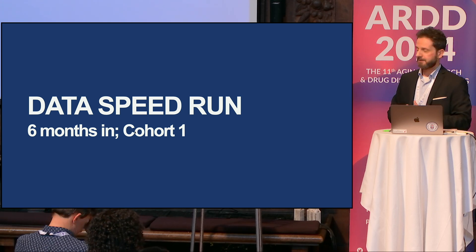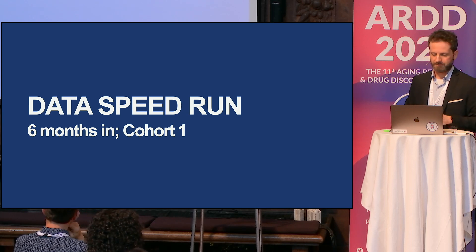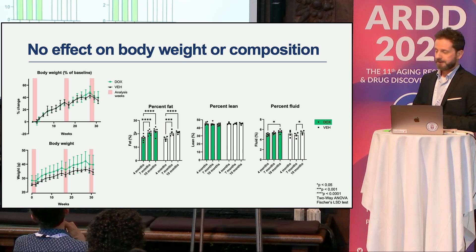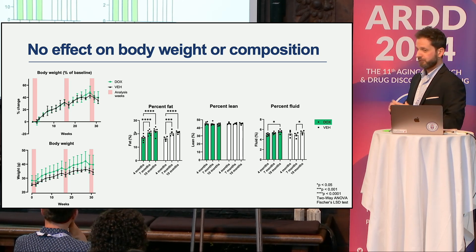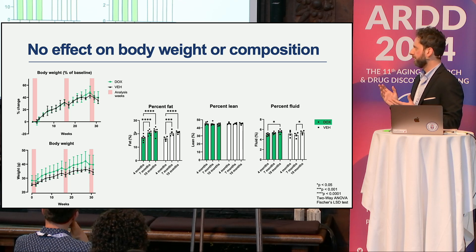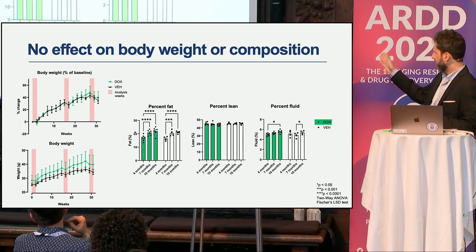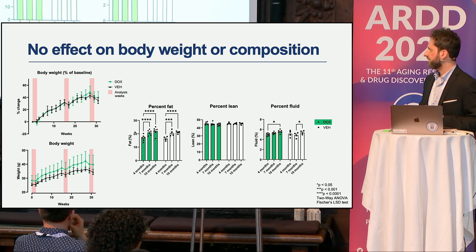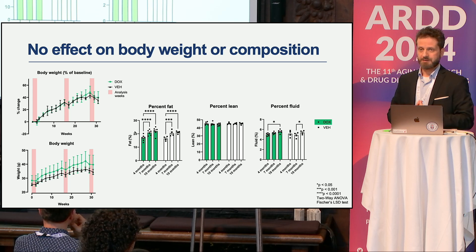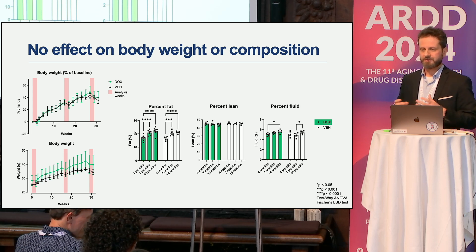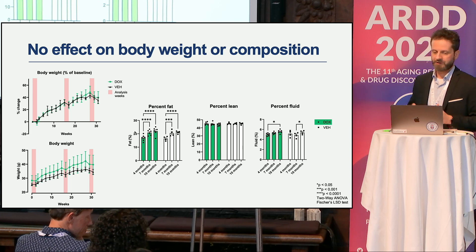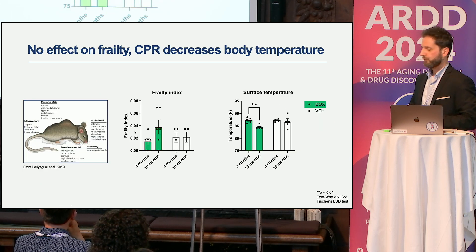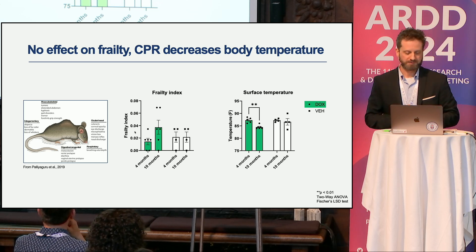A few caveats: this is preliminary data at just six months in for cohort one. Body weight in the doxycycline-treated, reprogrammed animals tracks almost identically to vehicle controls. NMR results show both groups gain weight in the same compartment—fat. This matters because one of the earliest signs of reprogramming toxicity is weight loss, so the fact that reprogrammed animals gain weight at the same rate and in the same compartment as vehicle mice is reassuring. The frailty index shows no differences, which is expected since these animals are roughly 10 months old—equivalent to about 35 human years.